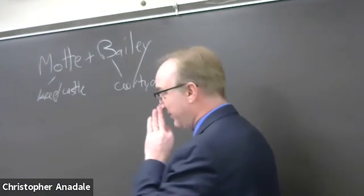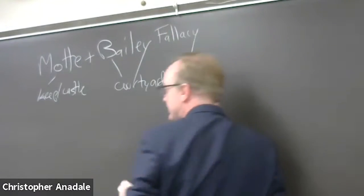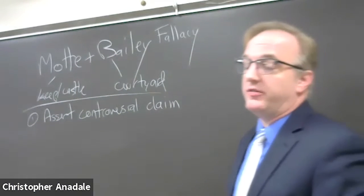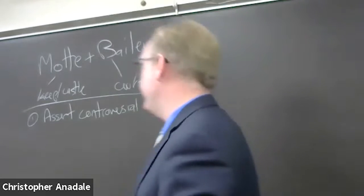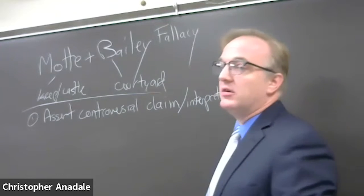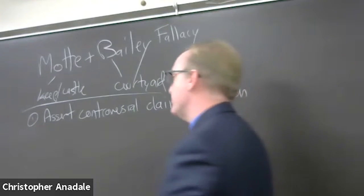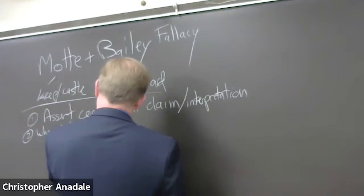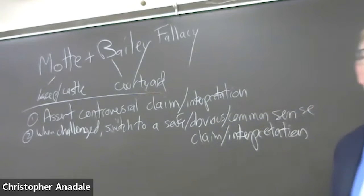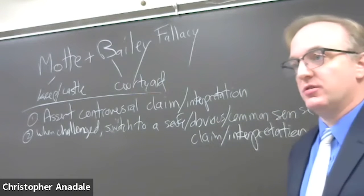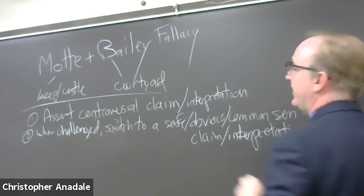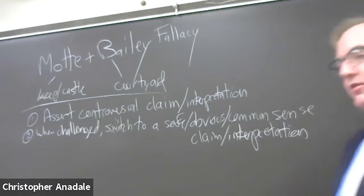The Mott and Bailey fallacy works in this way. First, the arguer asserts a controversial claim or a controversial interpretation of a point of view that's likely to meet with objection. And then when challenged, they switch — without remarking it — to defending a safe, obvious, or common sense version of the claim, rather than the controversial one.